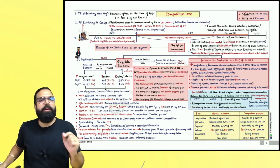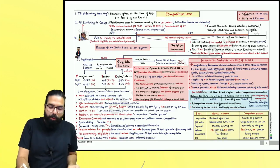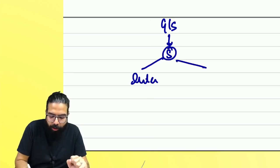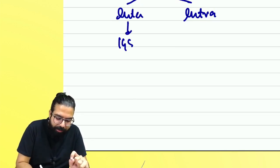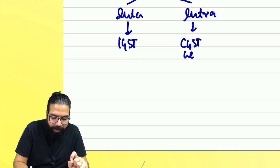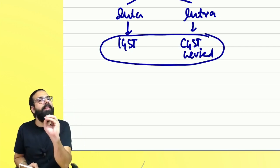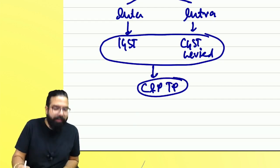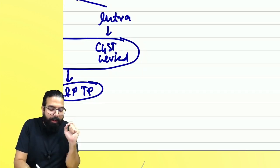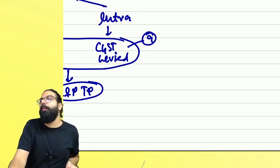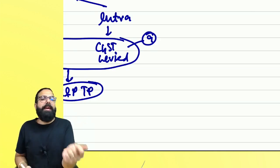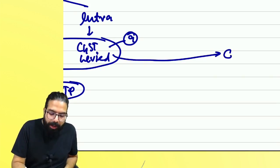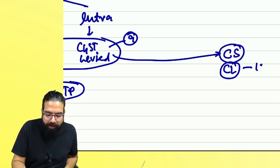Let's revise the composition levy. We started learning GST with goods or services being supplied — either interstate supply, where IGST is levied, or intrastate supply, where CGST is levied. Once GST is levied, it has to be collected and paid by a taxable person. Some people came and said the normal scheme under Section 9 has too much headache — collecting GST, paying GST, taking ITC, setting off output tax. So the government gave them a simpler option.